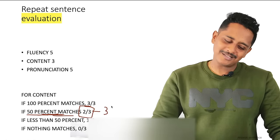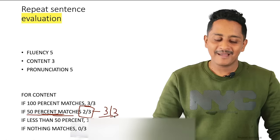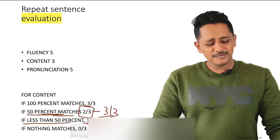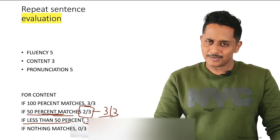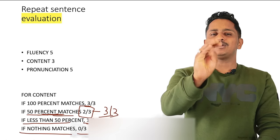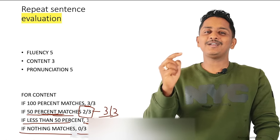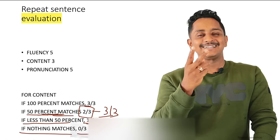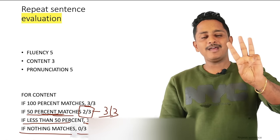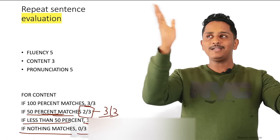Content is the bigger problem. Pearson says if you speak 100% of the content from the audio, you get 3 out of 3. If 50% of the content matches, you get 2 out of 3 — though from our experience it's mostly 3 out of 3. If it's less than 50%, you probably get one, but from my experience it's usually zero.